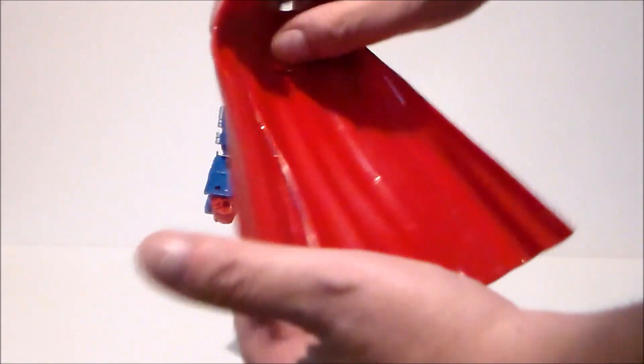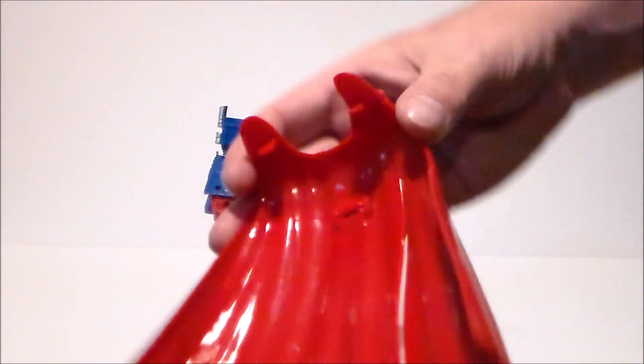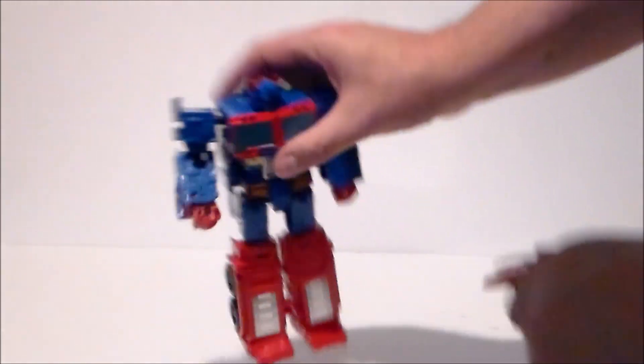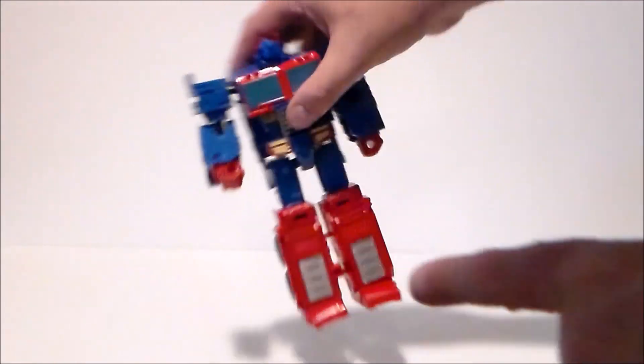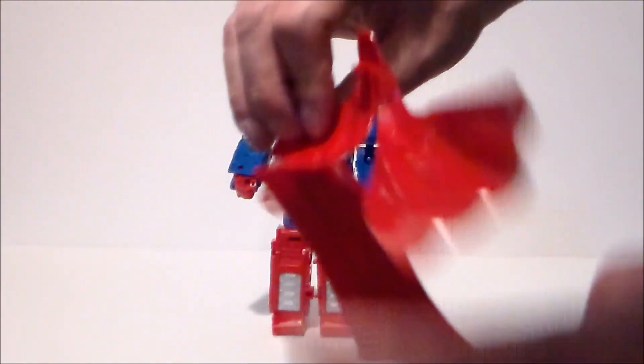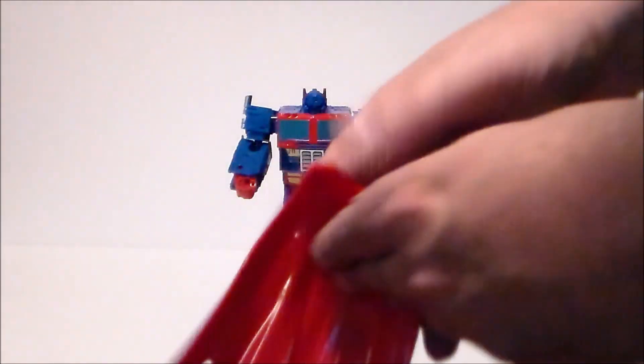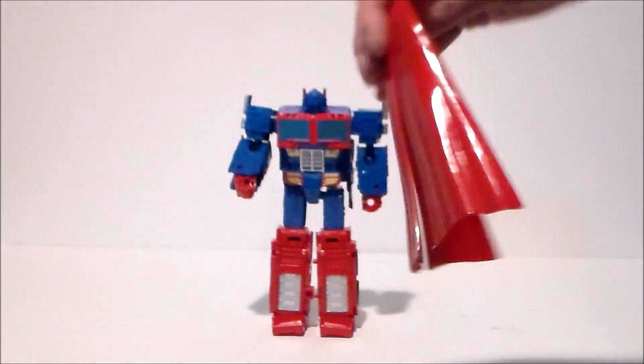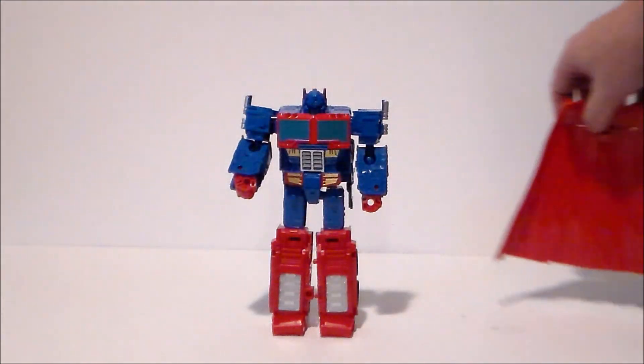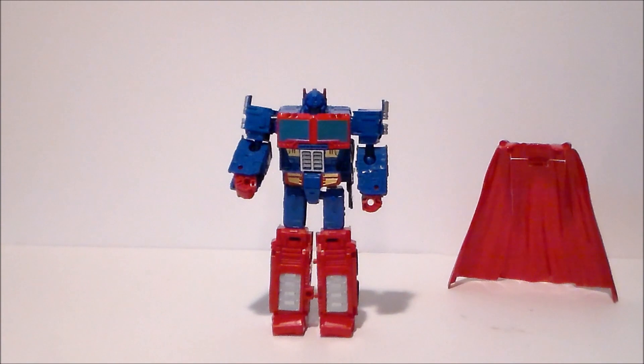So here we go, just put Prime there, and this is what the cape looks like. It's a very solid cape with these little pegs that go into the shoulders right there. Very nice, very cool. The fact they put that articulation on there is very nice when you're posing it. I really dig that cape. Very cool robo-cape.